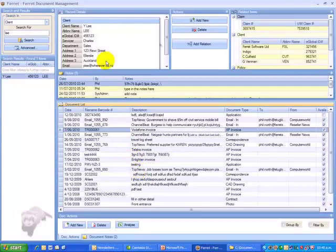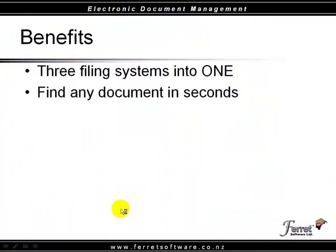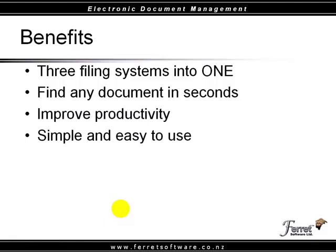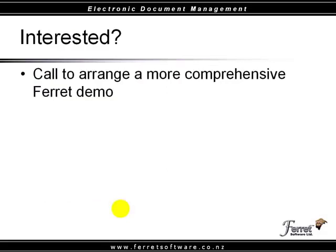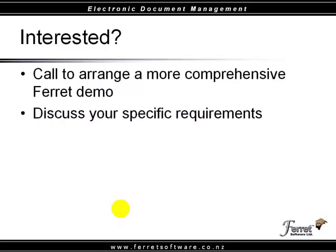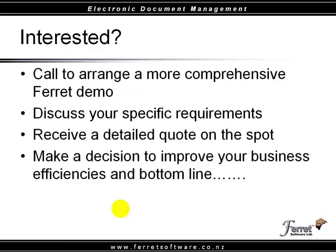Ferret is a single screen — real simple to use. There's your record, associated or linked records, your notes, your document table, and your search section. The benefits are: three filing systems in one, find anything in seconds, improve your productivity, simple and easy to use, customize it to suit yourself, very fast return on investment. If you're interested, call us to arrange a more comprehensive demo, discuss your specific needs and requirements, receive a detailed quote on the spot, and make a decision to move forward.